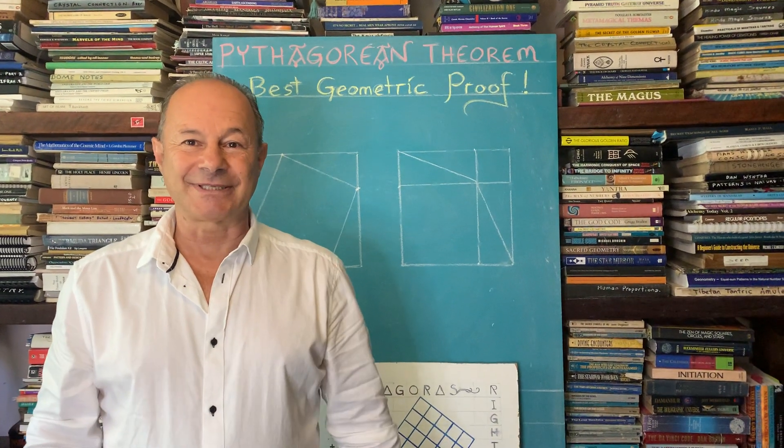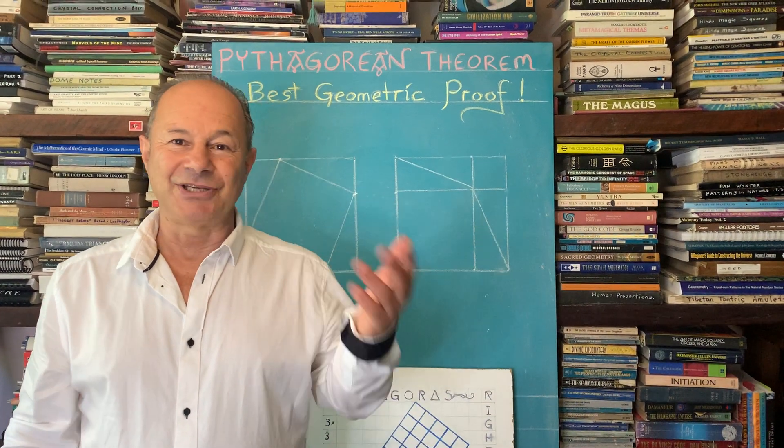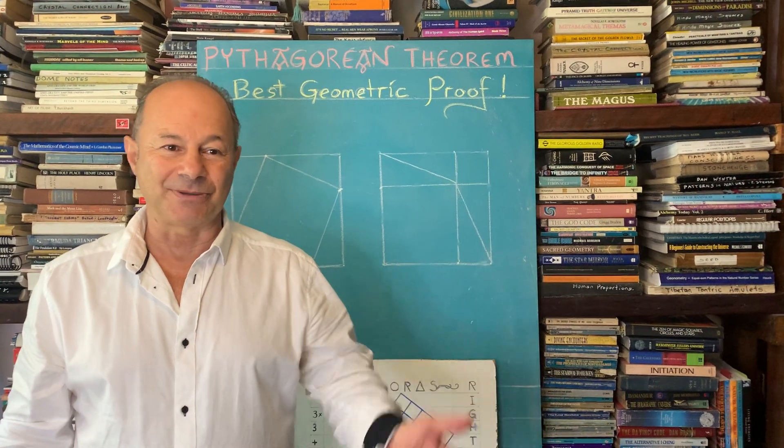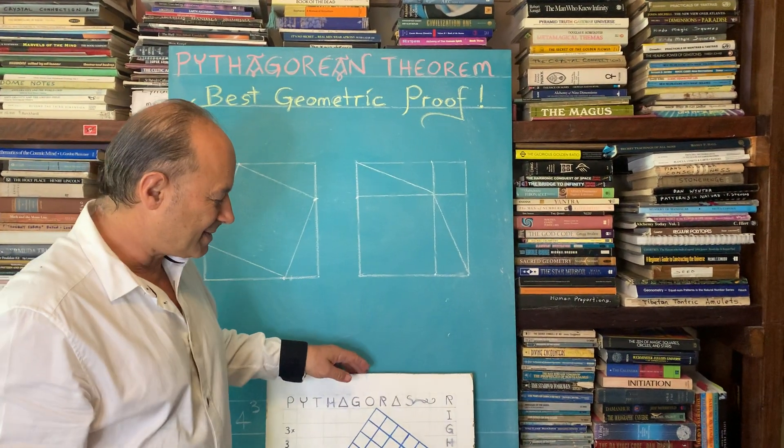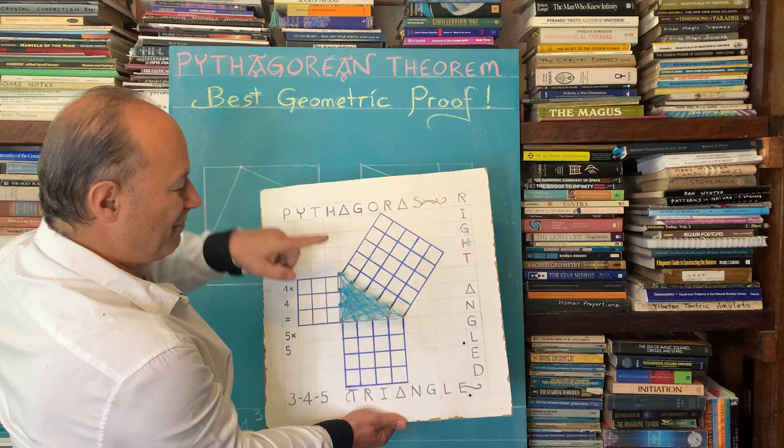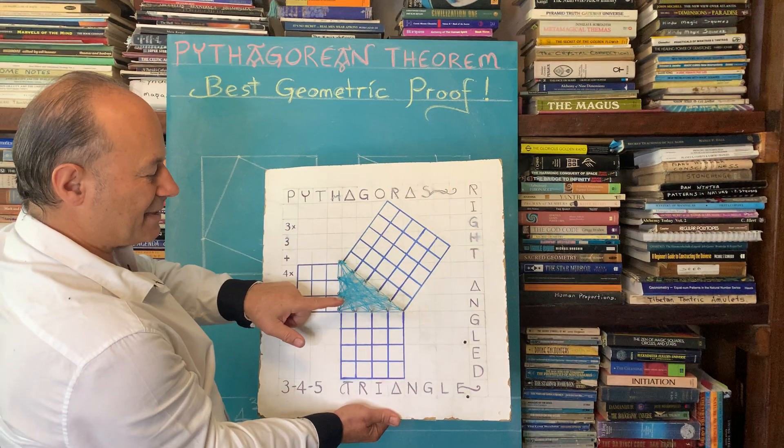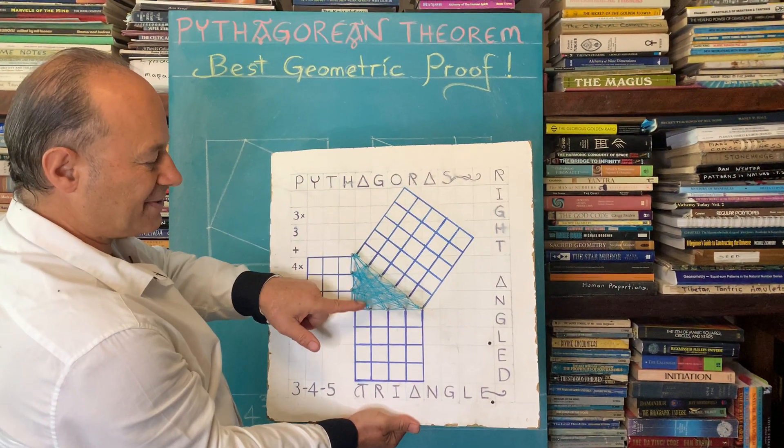We all have heard of Pythagoras' Theorem, which is really from ancient India, Sumeria, Egypt. Many cultures have shown us that when you have a right angle triangle, only because it's a 90 degree angle, a quarter of a circle.